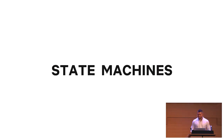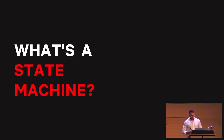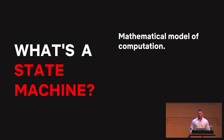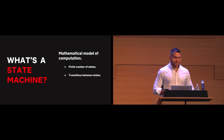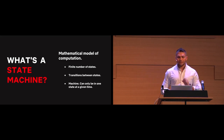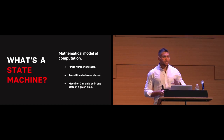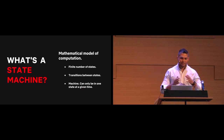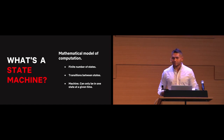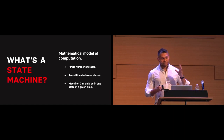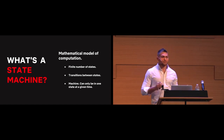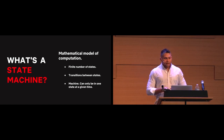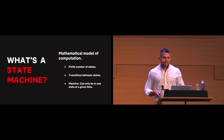So let's talk about state machines. A state machine is a mathematical model of computation with a finite number of states, transitions between states, and a machine that can only be in one state at a given time. In reality, a state machine can be seen as a directed graph where each node represents a state, the connections between nodes represent transitions, and you just need a pointer that tells you what state you are in at a given time.